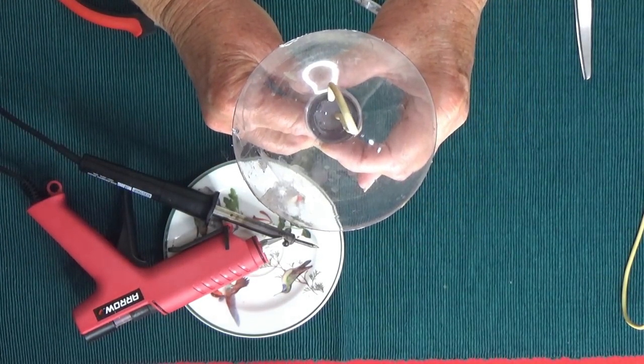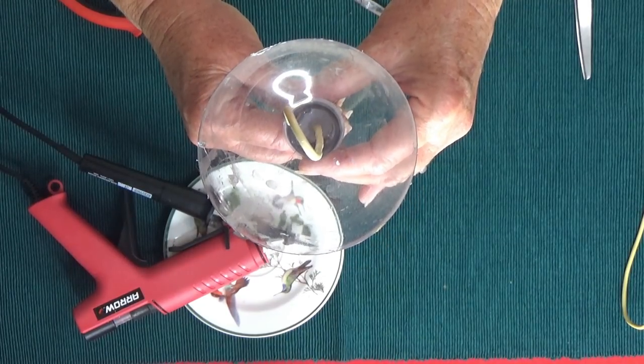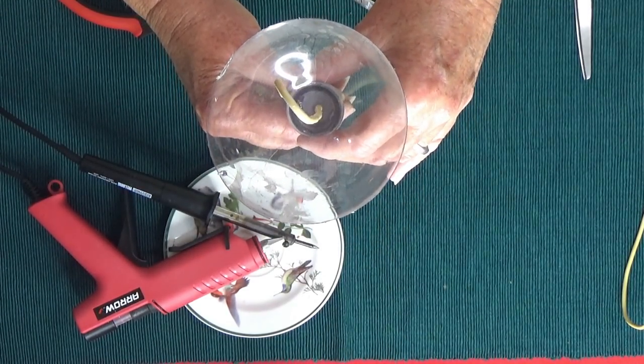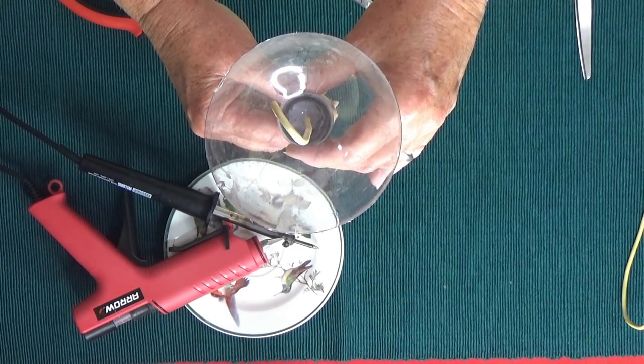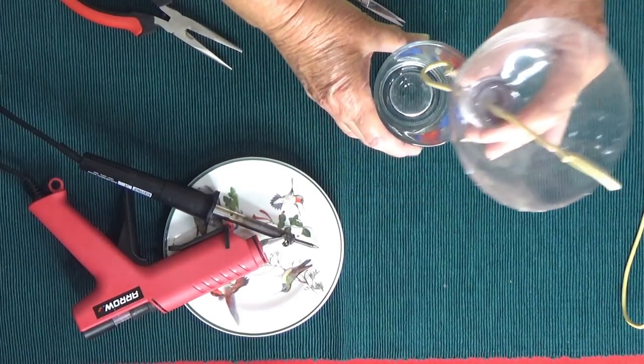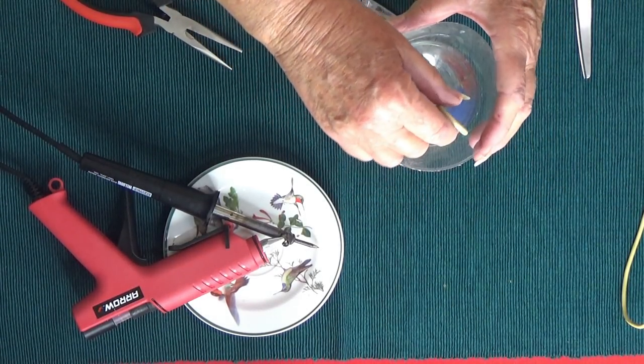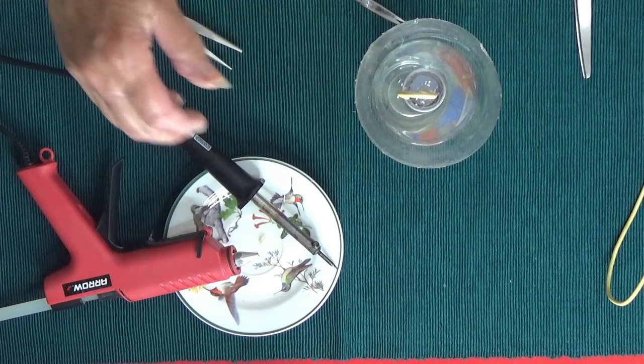And we want it centered, because what we're doing is we're making sure the ants cannot crawl across. You can set this on a cup and let it dry. Once it's dry, it's not going to go anywhere. It dries fairly quick, so you can use a glass or a cup and sit it in there. Make sure you get it exactly where you want.